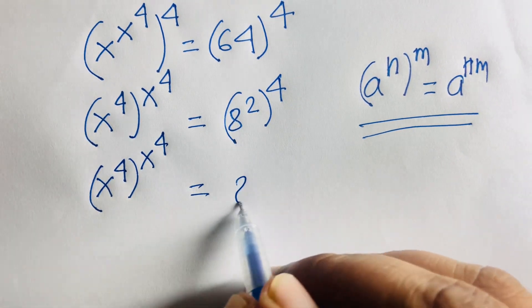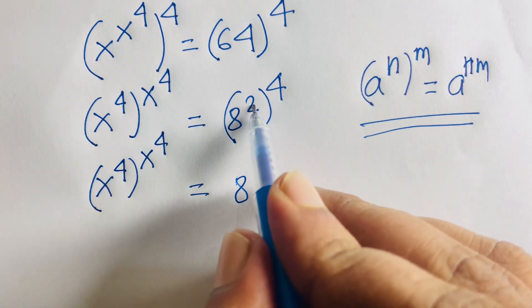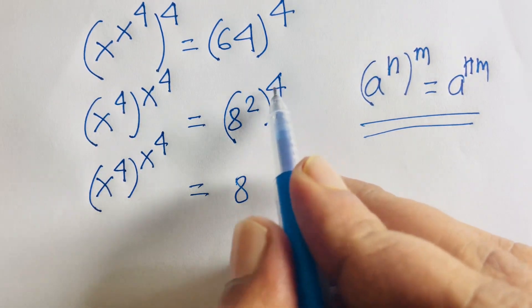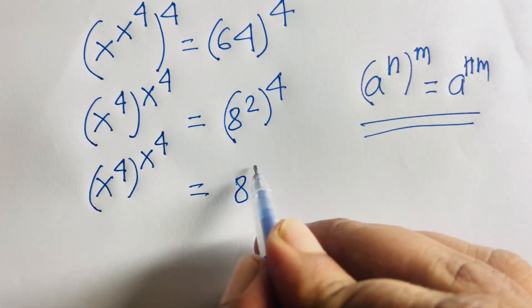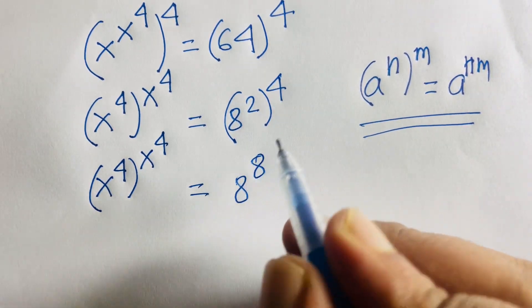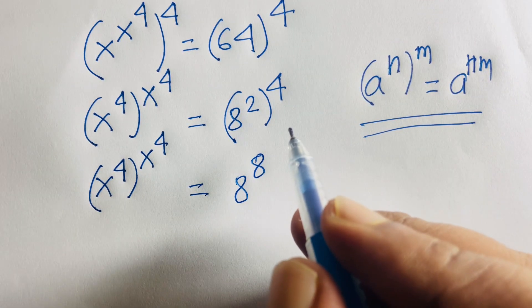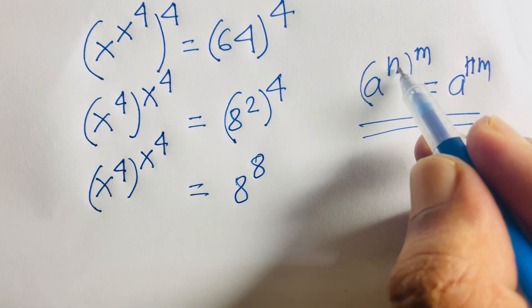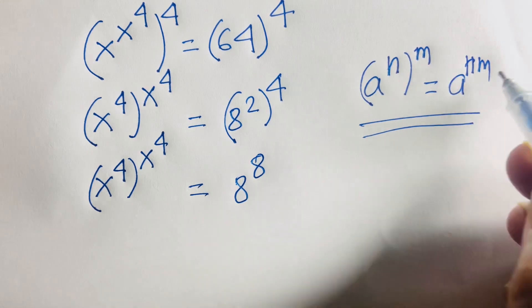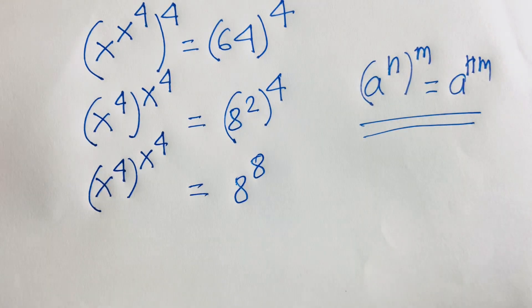Here is 8 and we know that 2 to the power 4 — here is 2 times 4, it will be 8. Because of that, we know that a to the power n times m, it will be n times m.